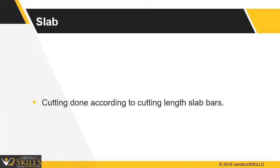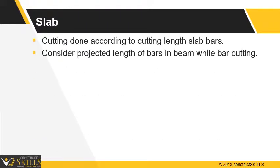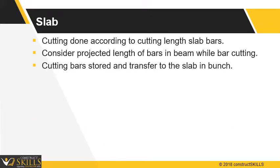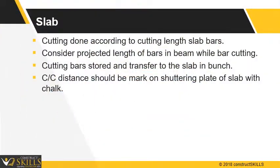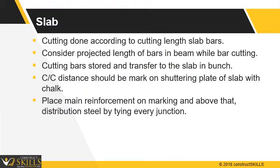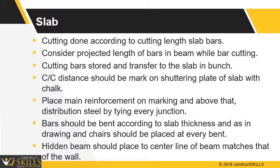For slabs, cutting should be done according to the cutting length of the slab bars. Consider the projected length of bars in continuous beams while bar cutting. The cutting bars should be stored and transferred to the respective slab in bunch-wise. Center-to-center distance should be marked on the shuttering plate of the slab with chalk or marker. Place the main reinforcement as per marking, and above that, place distribution steel by tying every junction. Bars should be bent according to slab thickness as per drawings, and chairs should be placed at every bent. Hidden beams should be placed according to the center line of the beam matching that of the wall.